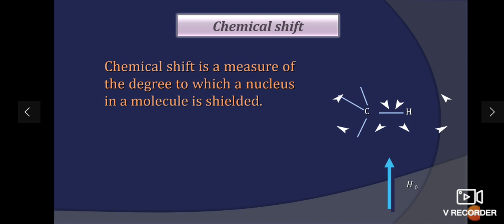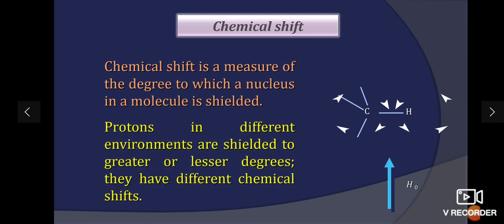What is chemical shift? It is a measure of the degree to which a nucleus in a molecule is shielded. Where the protons in different environments are shielded to greater or lesser degrees, they have different chemical shift.